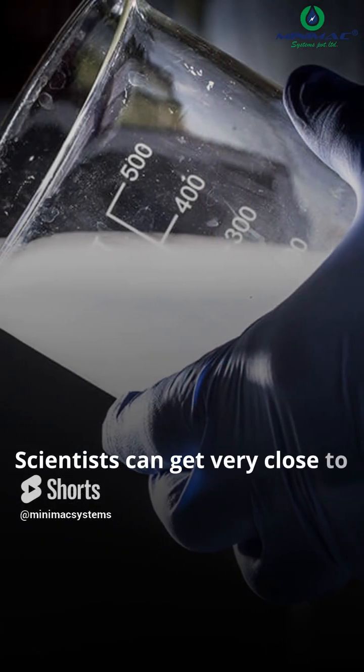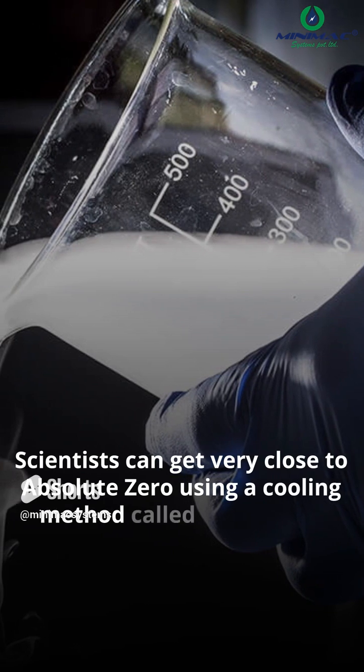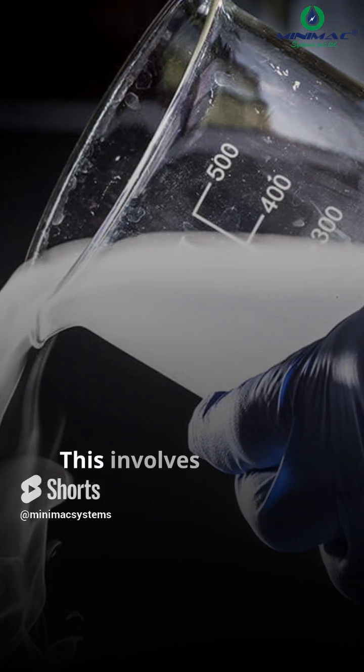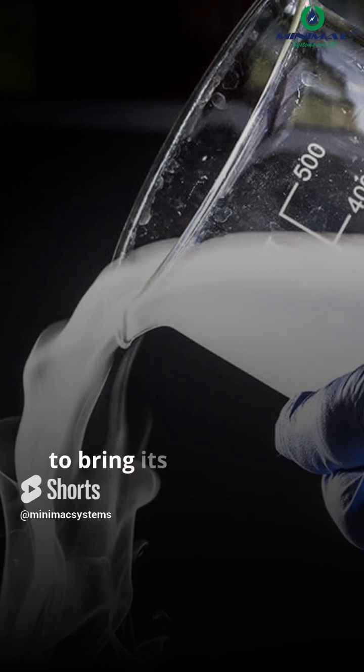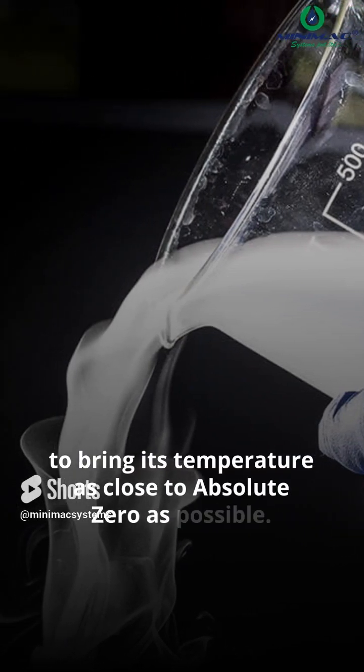Scientists can get very close to absolute zero using a cooling method called cryogenics. This involves cooling a substance with liquid nitrogen or other gases to bring its temperature as close to absolute zero as possible.